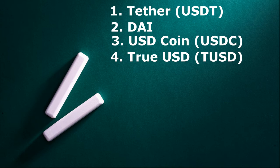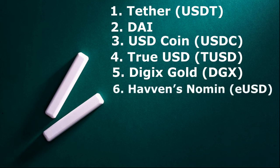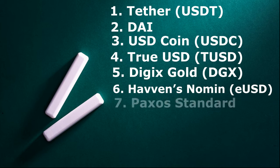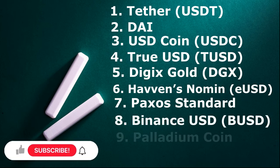The next one is DGX — DGX Gold — which is equally a stablecoin, so don't expect its value to keep increasing when Bitcoin is increasing. Then we have EUSD, also known as Havens, which is another stablecoin. After that we have Paxos, which is equally a stablecoin and is in partnership with PayPal — for those who use PayPal in the US, Paxos and PayPal are working together.